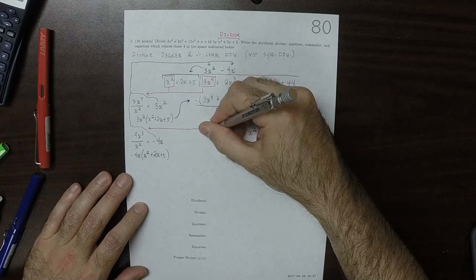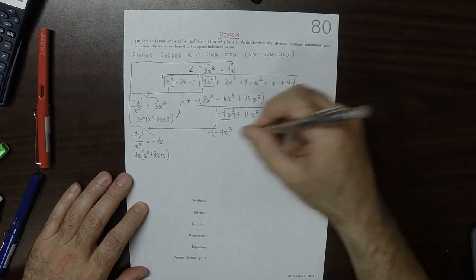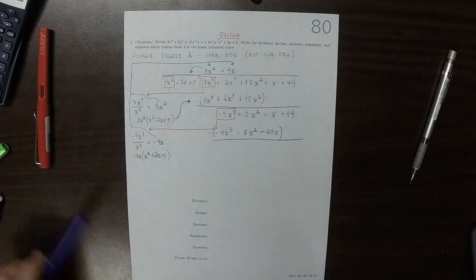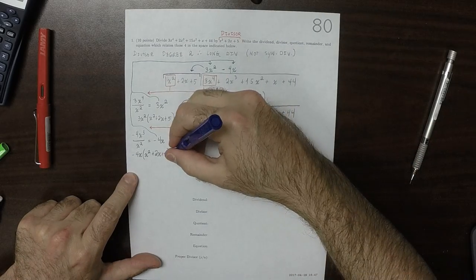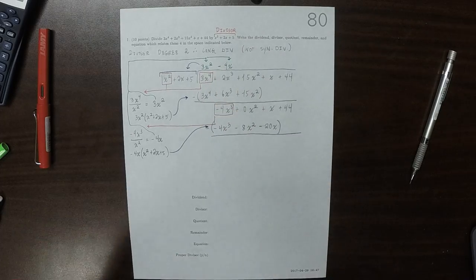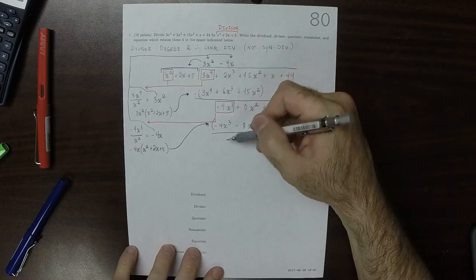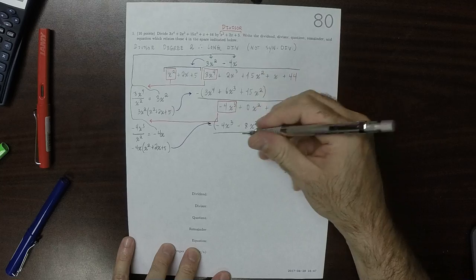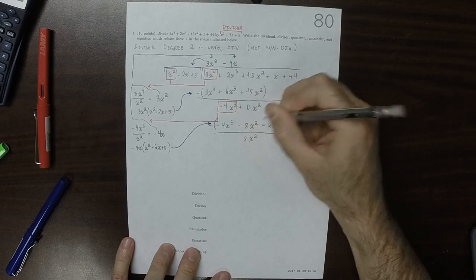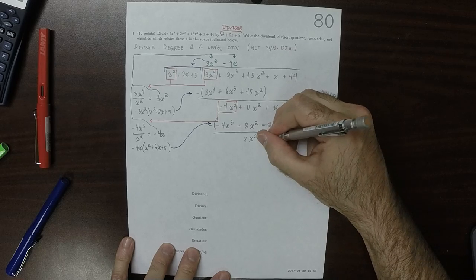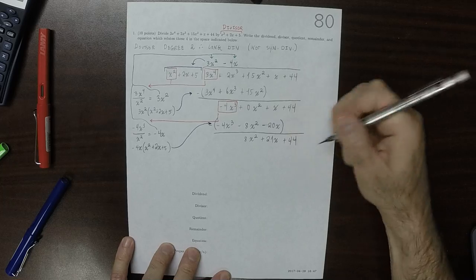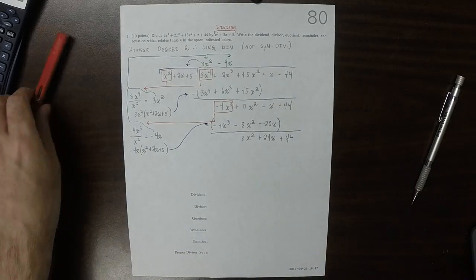Parenthesize all of that and subtract. The cubes go away. Subtracting negative 8x squared, so that's 8x squared plus 21x plus 44. That round is finished.